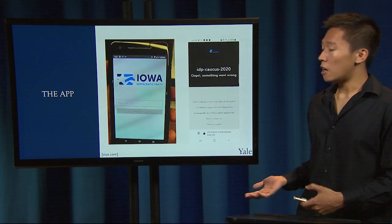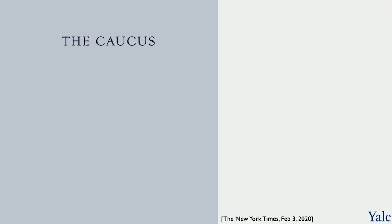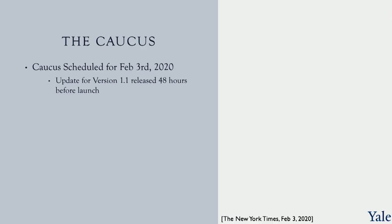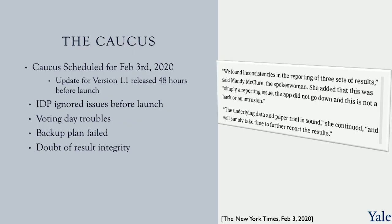Here's what the app actually looked like. On the right side, where it says 'oops, something went wrong' — that's kind of what everybody saw that night when they tried to sign into the app. The caucus had originally been scheduled for February 3rd, 2020, but because the company was running late and released a last-minute update — version 1.1 released just 48 hours before launch — the Iowa Democratic Party had ignored a bunch of known issues before launch, which resulted in voting day troubles, which then overwhelmed the backup phone plan, and ultimately resulted in doubt of the integrity of the election results.